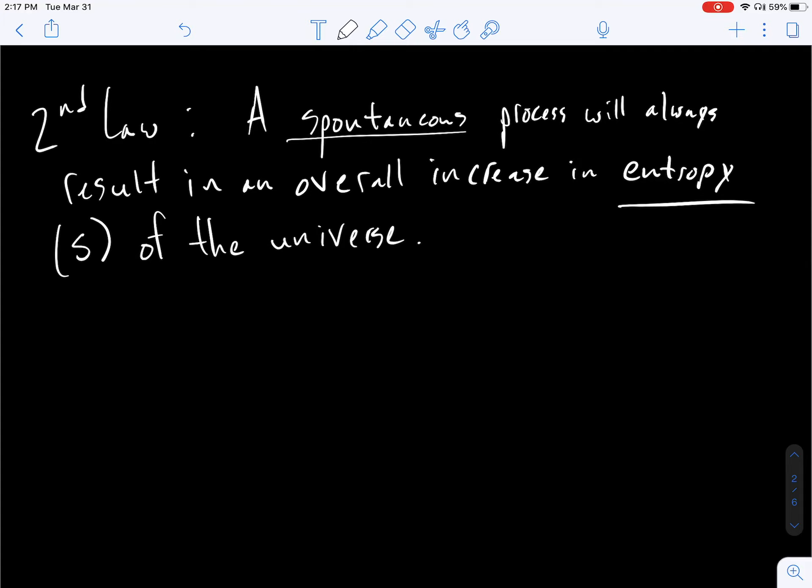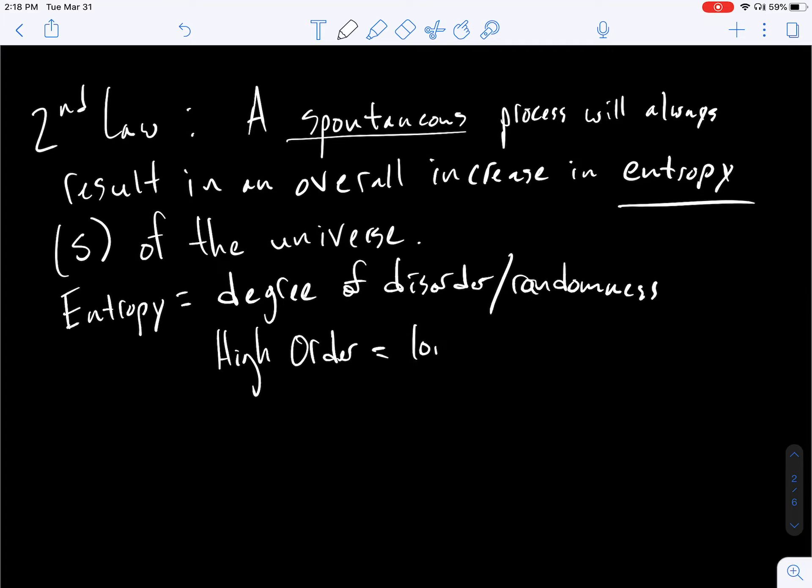Entropy essentially is the degree of randomness in the universe. Entropy: degree of disorder or randomness. And this is the lower energy state. So like high order, think like a crystalline solid, equals low entropy. So if you have something really tightly bound, high order, that's low energy, low entropy. And this is a lot of stored energy, high energy.